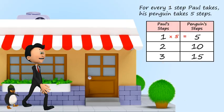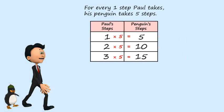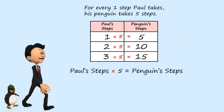Well, it works for the first one, and it works for the second one, and the third one as well. Looks like we've created a little relationship here. Let's investigate a little more. If I wanted to write this as more of a math sentence, I could say that Paul's steps times five equals the penguin's steps.